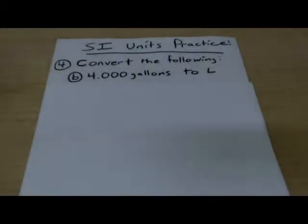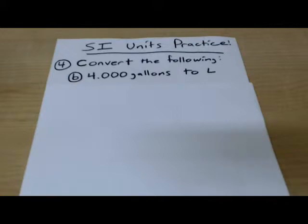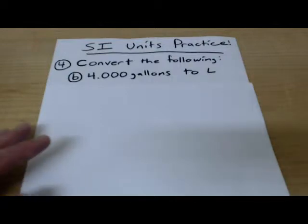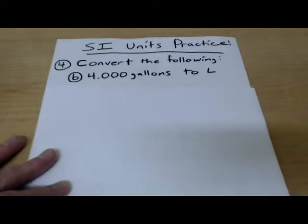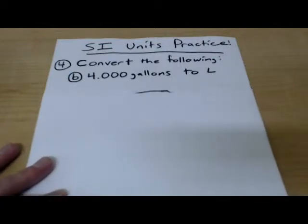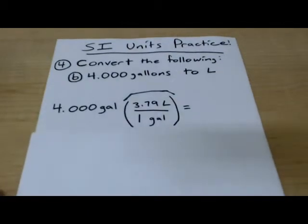Okay, so this will be our last problem. Convert the following 4.000 gallons to liters. So, again this is converting the American system to metric system. And we'll set it up like this. 4.000 gallons and then multiplied by 3.79 liters divided by one gallon.